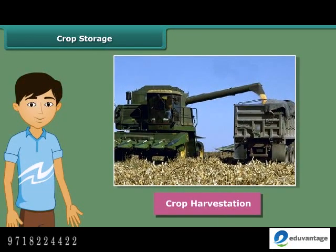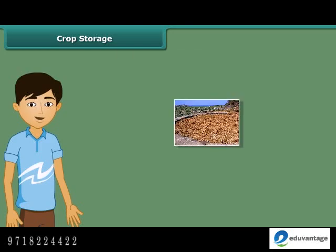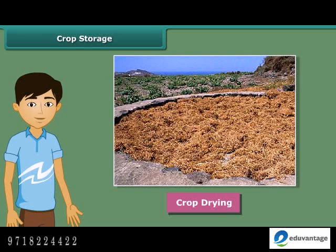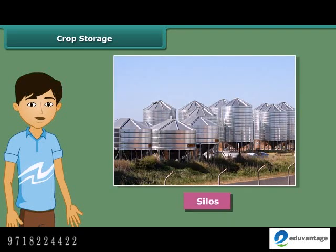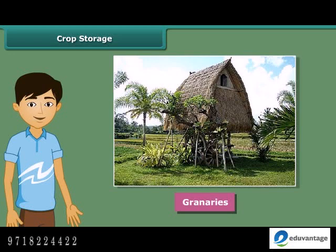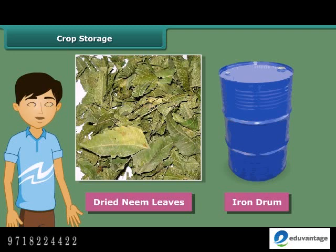Once harvesting is done, crops are stored in huge storages. We should take some precautions: if the harvested grains are stored without drying, they may get spoiled or attacked by organisms and lose their germination capacity. So the grains should be properly dried in the sun to reduce moisture. Farmers store grains in jute bags or metallic bins, but for large-scale storage they use silos and granaries. People also keep dried neem leaves in an iron drum for storing food grains, as dried neem leaves protect the grains from pests and microorganisms.